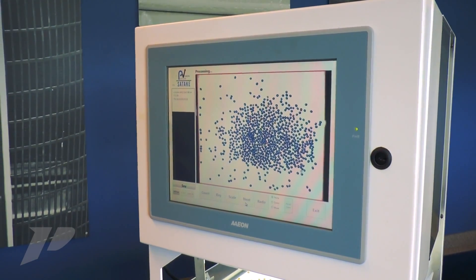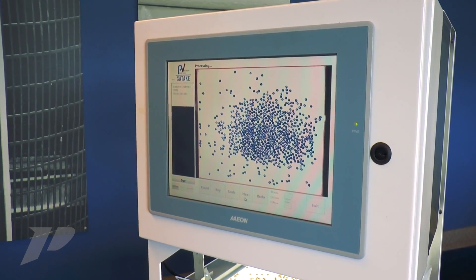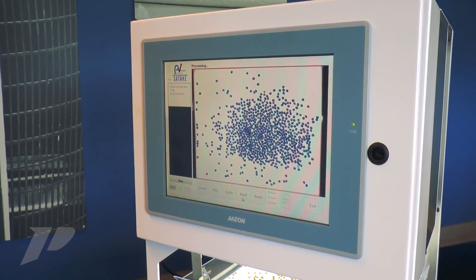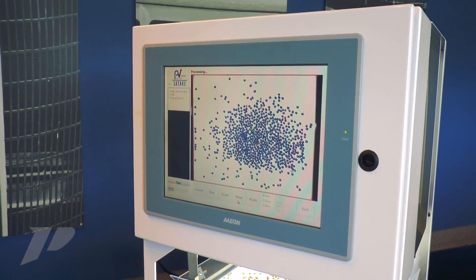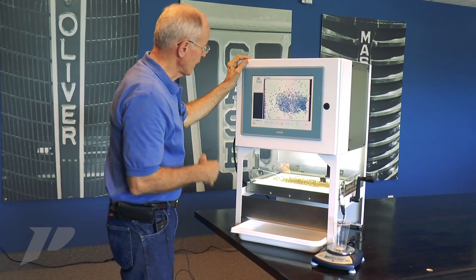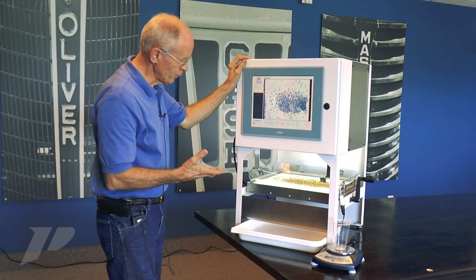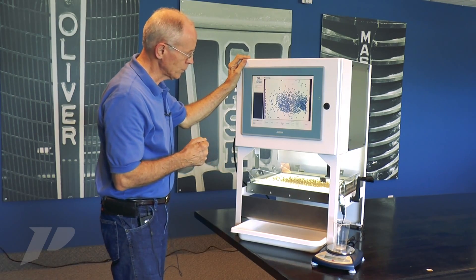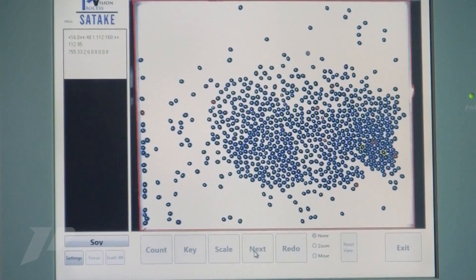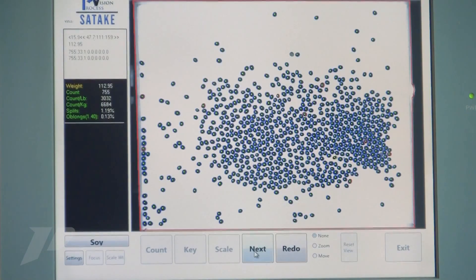You see the product has spread nicely, and we wait for a few moments for the product to settle down, take an image and count it. We vibrate again to get a little different view of the image and count again, and we have two counts of 755.